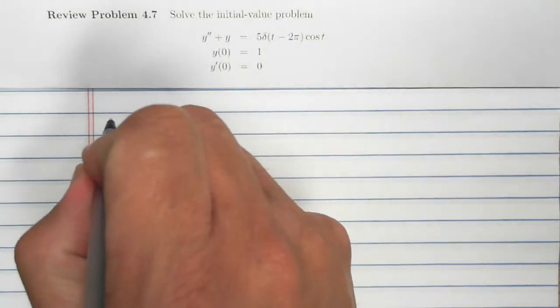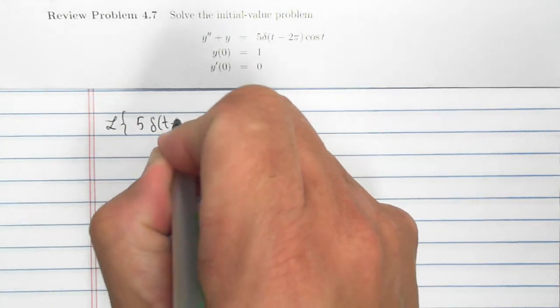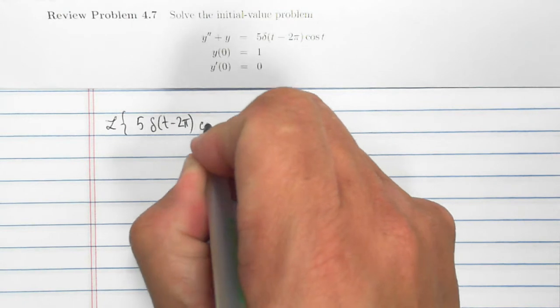So to get started, let's figure out the Laplace transform of the right-hand side: the Laplace transform of 5 times delta of t minus pi times cosine t.